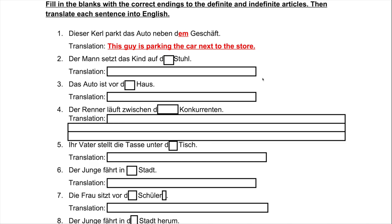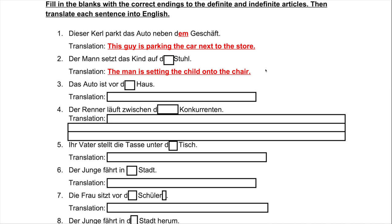'Der Mann setzt das Kind auf ___ Stuhl.' Translating: 'der Mann' is the man, 'setzt' means sets or places in a sitting position, 'das Kind' is the child, and then 'on the chair.' The whole sentence says: the man is setting the child onto the chair. We are moving from not on the chair to on the chair, so this is accusative. 'Stuhl' is masculine, so we use 'den Stuhl.' Answer: 'Der Mann setzt das Kind auf den Stuhl' — the man sets the child onto the chair.